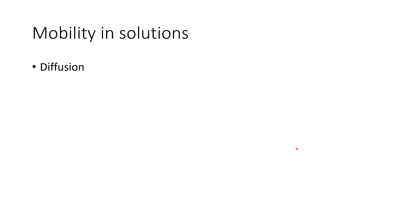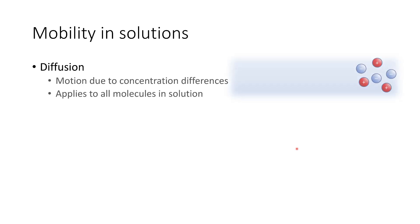We'll first introduce some basic concepts to cover mobility in solutions. The first of these is diffusion. Diffusion is simply motion due to concentration differences. So if we have a concentration of ions in one part of the solution, we would expect these to diffuse through the solution so that we get an even concentration throughout. This applies to all molecules in that solution.